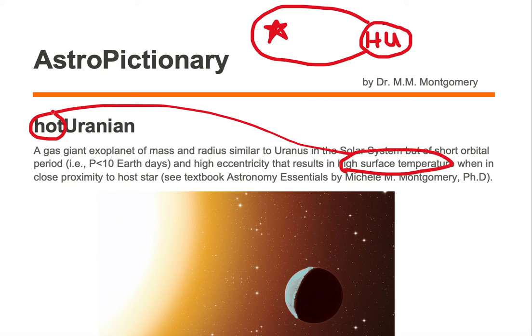And because the exoplanet has mass and radius similar to Uranus in our solar system, the 'Uranian' part of the name comes from Uranus — hence, hot Uranian.